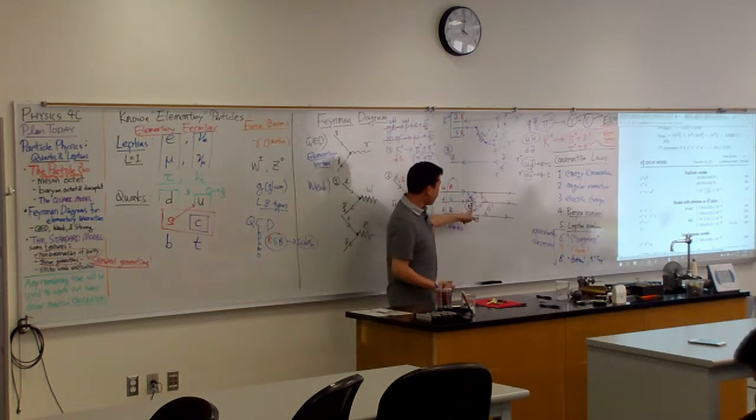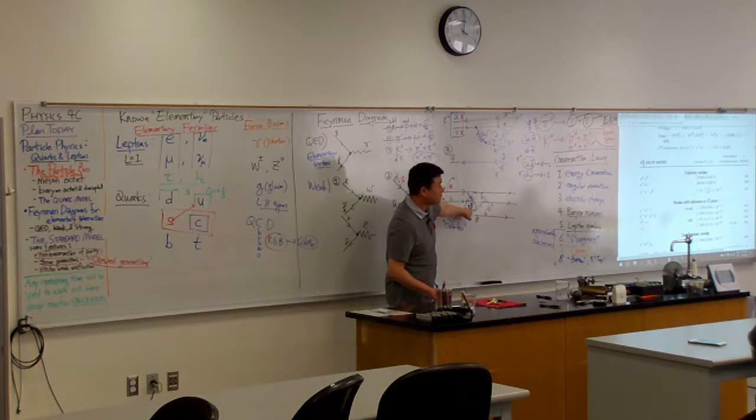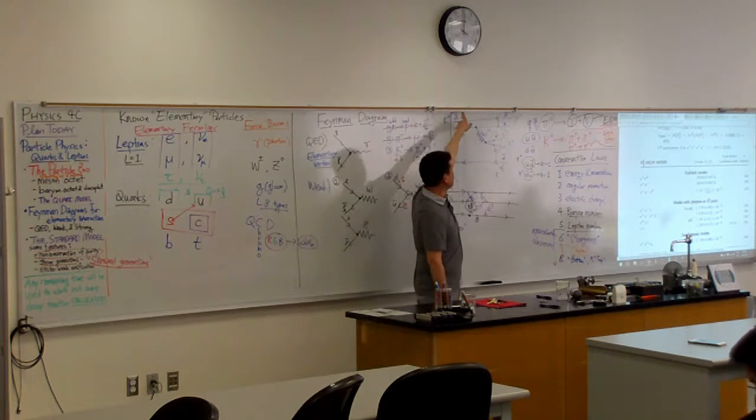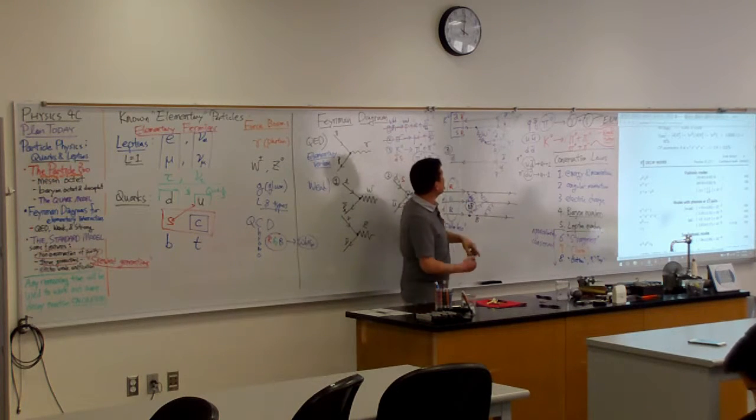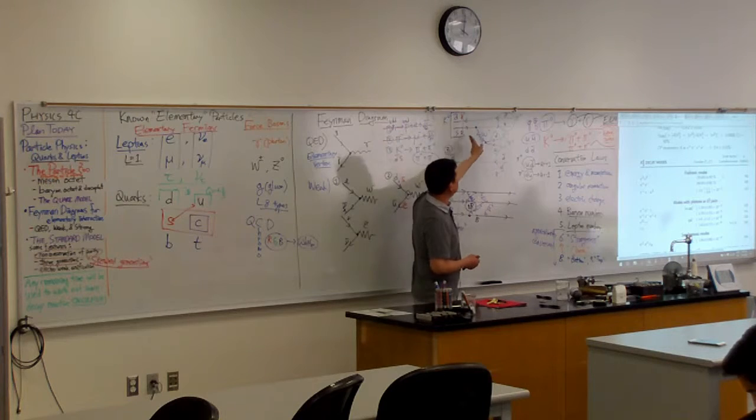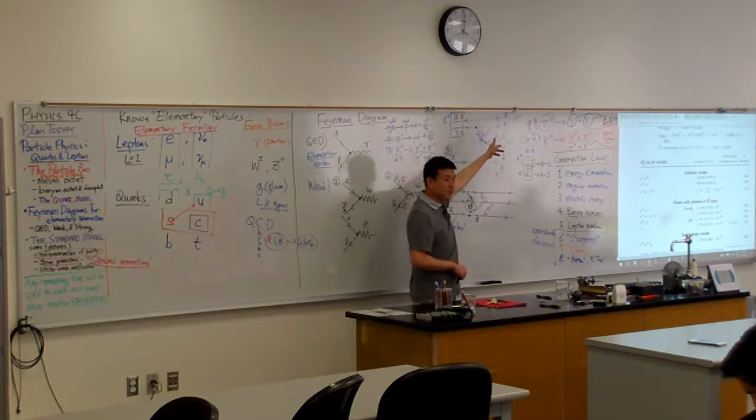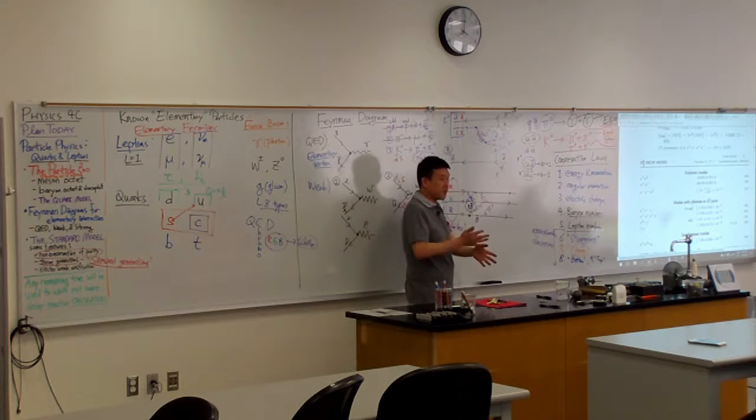It turns out one of the combinations like this is color neutral. This is kind of what I was referring to when I was saying this is kind of simplified. There's one combination of red, anti-red, blue, anti-blue, the green, anti-green, one kind of anti-symmetric combination.